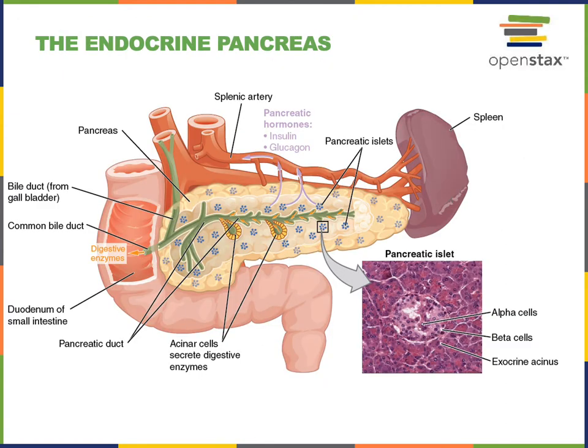The pancreas has both exocrine functions as well as endocrine functions. As an exocrine gland, the pancreas contains acinar cells that secrete digestive enzymes, which travel through ducts into the small intestine. The endocrine functions of the pancreas come from clusters of cells known as pancreatic islets, or islets of Langerhans, which are distributed throughout the pancreas.